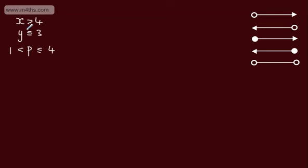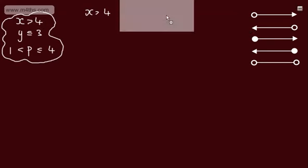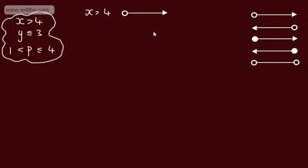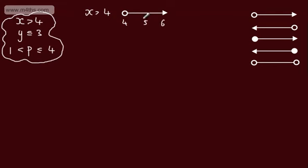Throughout the video we're going to look at both linear and quadratic inequalities. To start, I want to recap some basic terminology and notation. If we have x strictly greater than 4, we have a strict inequality. To express this on a number line, we use an open dot — we locate 4 on the number line and look at all values to the right, so 5, 6, and so on.